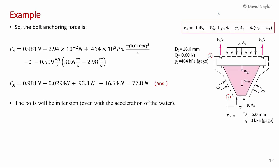So now we can calculate the bolt anchoring force. I've included the calculation with these pressures. We know the inlet pressure is 464 kilopascals gauge pressure. And so we have FA is equal to the weight of the nozzle, the weight of the water, which is small. Here's our P1 times the area at 1, pi D1 squared upon 4. Then minus the pressure at 2, which is 0 because we're working in gauge pressure. I could have left that out, but I just include it to demonstrate where it would go. If that pressure was not 0, then it would become a negative value.